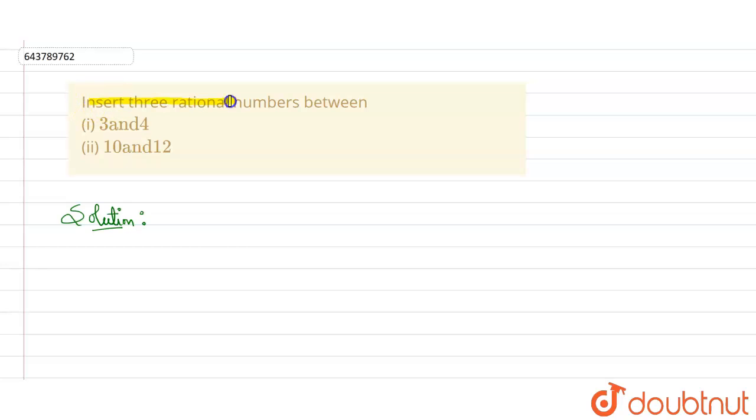We have to insert three rational numbers between 3 and 4, and 10 and 12. So let's consider the first part first - that is, we have to find three rational numbers between 3 and 4.